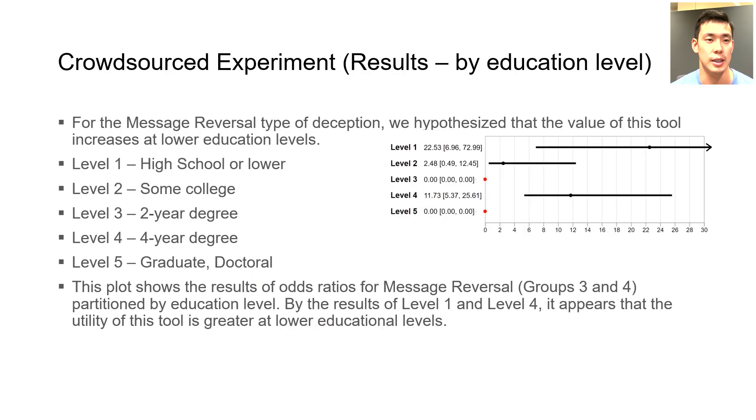We also conduct a brief analysis of our results partitioned by education level. For the message reversal experiment, the odds ratio is higher at lower educational levels, suggesting that the utility of this tool is greater for people with lower educational attainment.